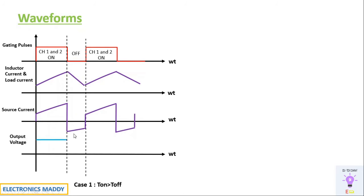For output voltage: it will be positive when CH1 and CH2 are turned on, and once they are off it goes negative. When CH1 and CH2 are turned on again it becomes positive, then goes negative again. Output voltage is both positive and negative, and as a result the circuit operates in the fourth quadrant.